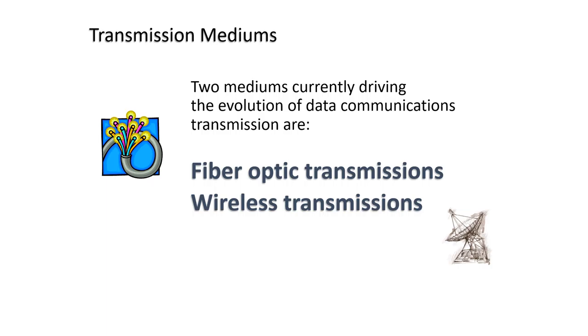Wireless communication involves no physical link established between two or more devices. Wireless signals are spread over in the air and are received and interpreted by appropriate antennas. It provides mobility for the user and allows a user to connect anytime and anywhere.